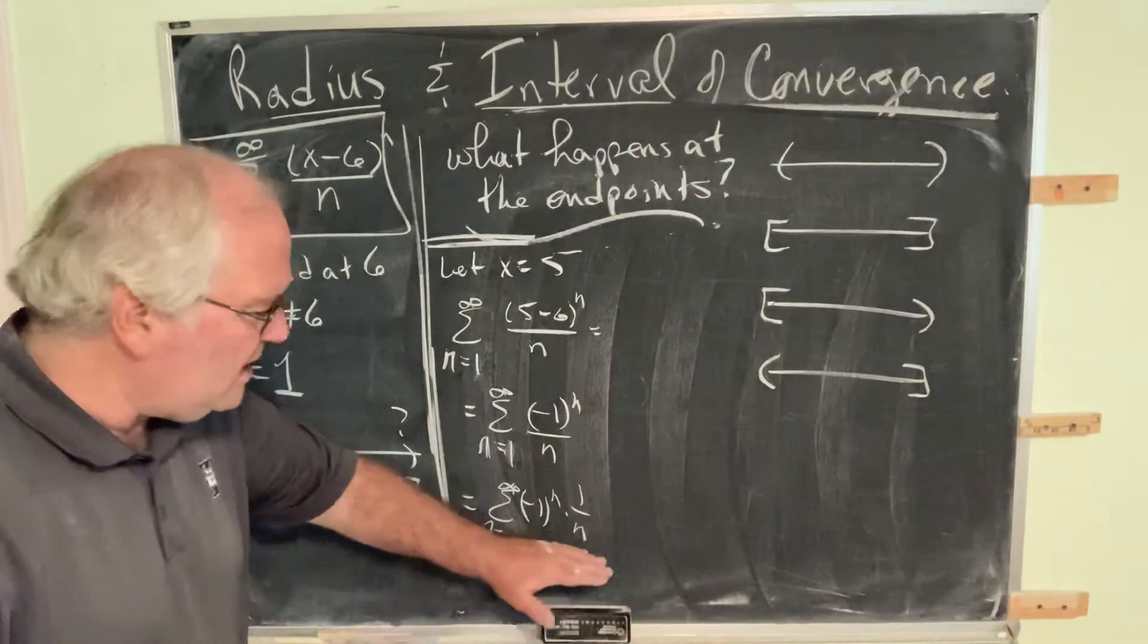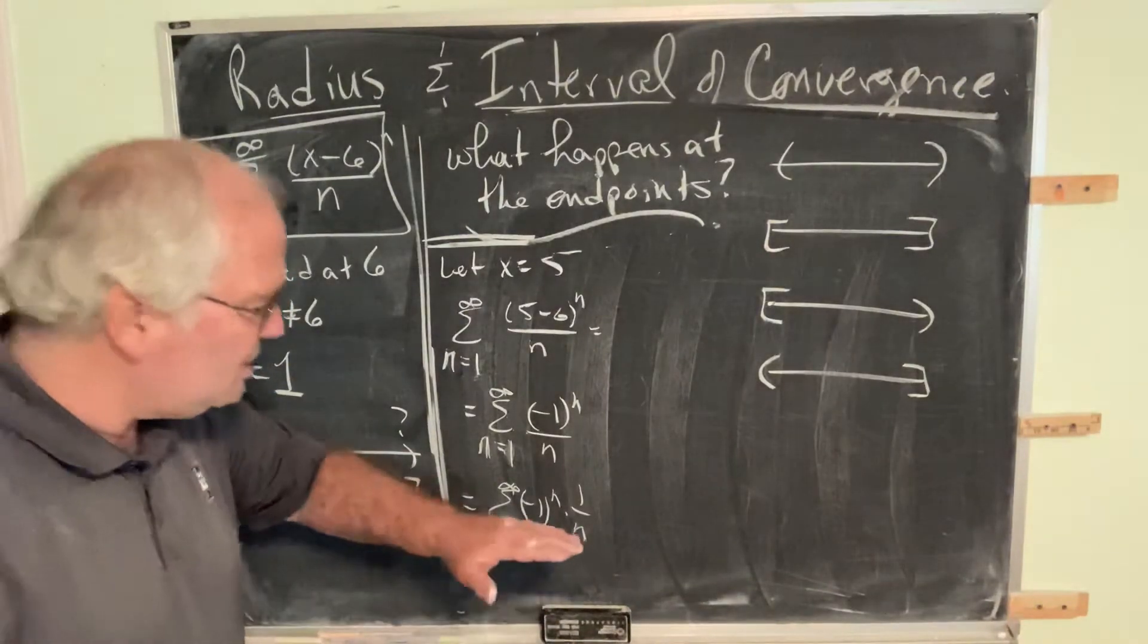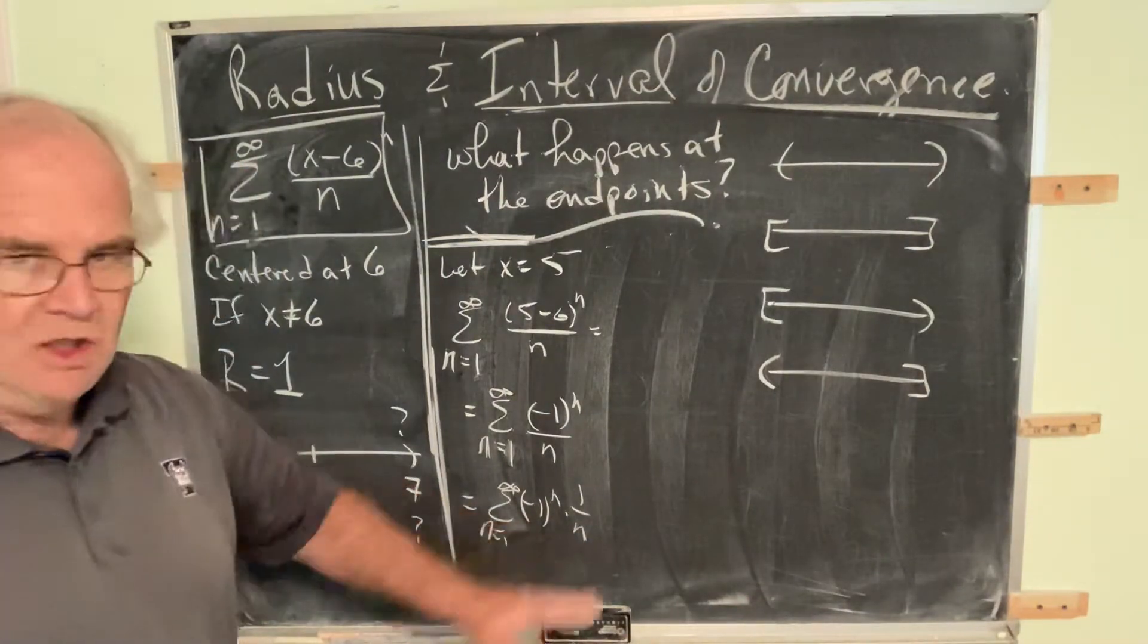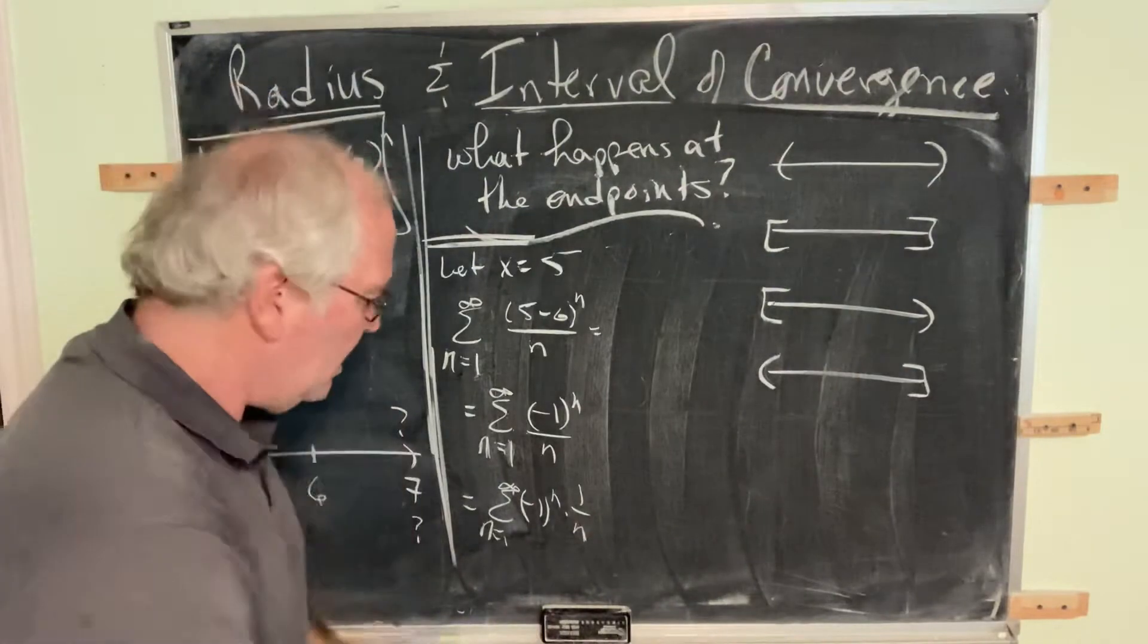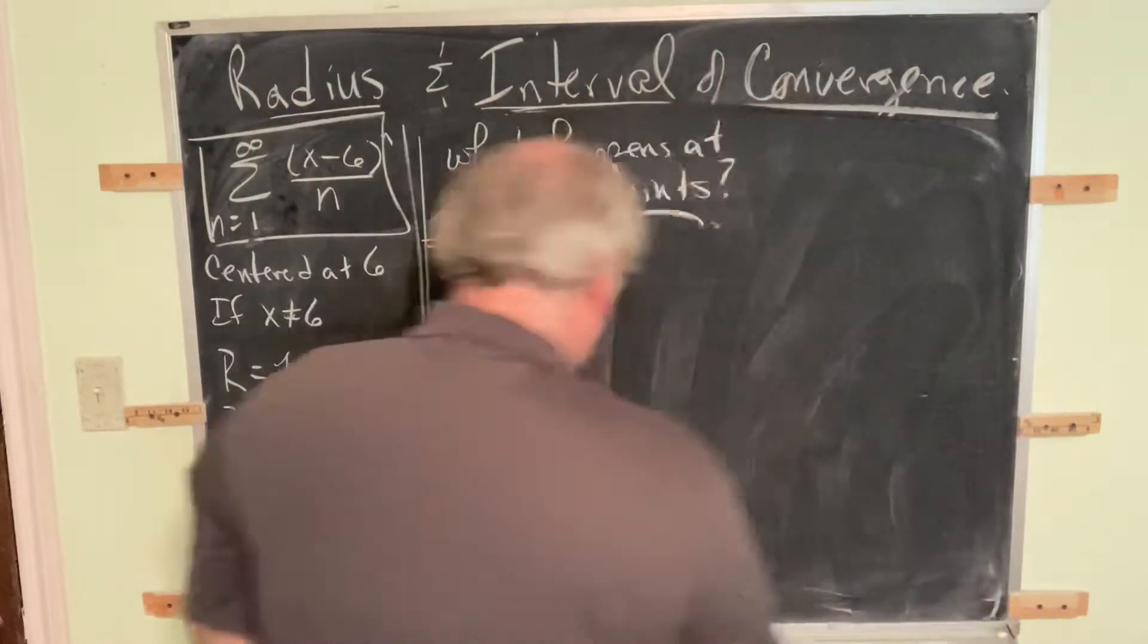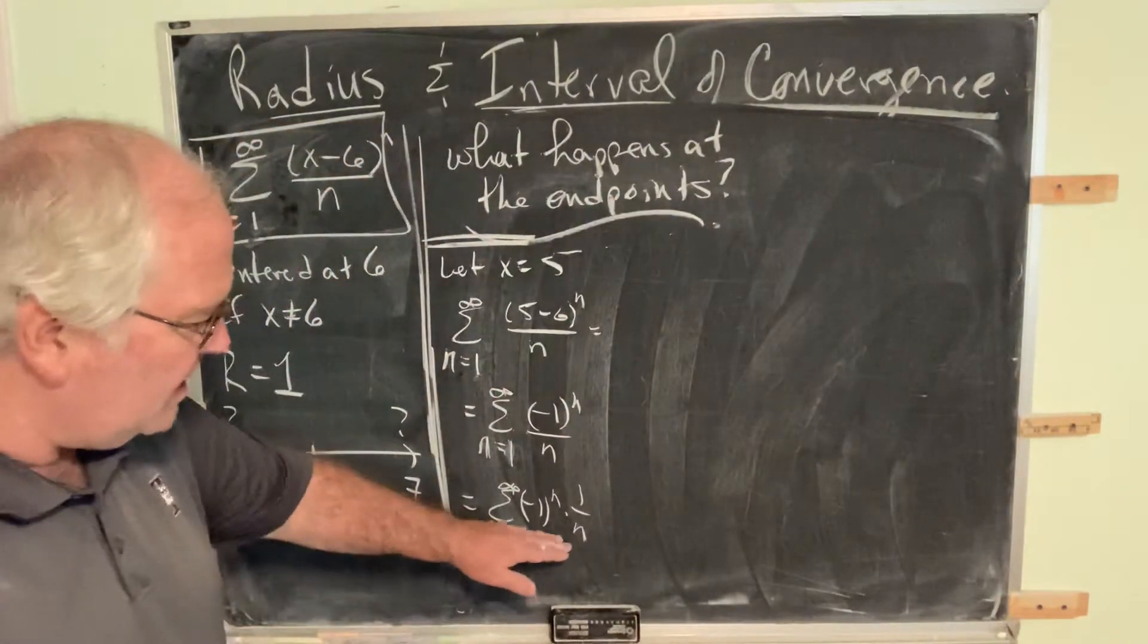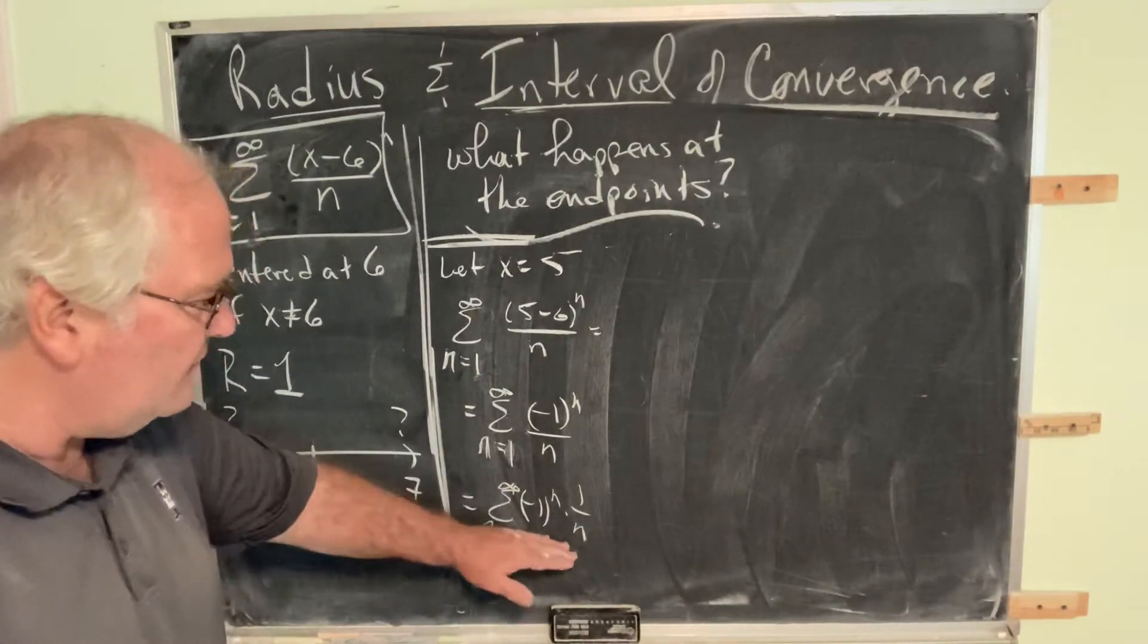What if we didn't recognize this is the alternating harmonic series? We must check this series for convergence on its own right, using all of our knowledge of how to check for a series to converge. So what we have is an alternating series, and we want to find out if that alternating series converges.